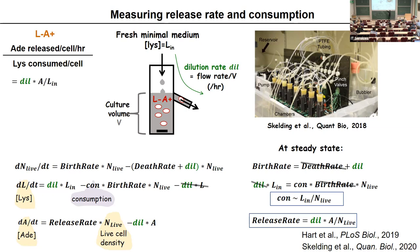This is really interesting: the dilution rate you set via the pump, L-in you know from how you made the medium — so the only thing you need to measure is the adenine concentration in the supernatant. This goes back to how math can help experimental design: it tells you what parameters you need to measure. The adenine concentration can be measured chemically by HPLC or biologically by measuring cell growth in the supernatant, and the two assays give similar results.